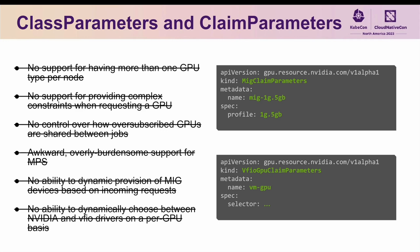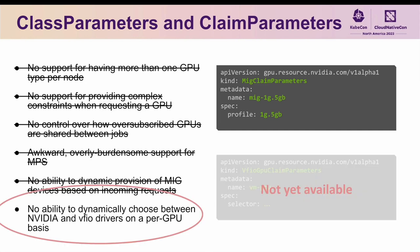With that, we've demonstrated how DRA can help us overcome the primary limitations we have with supporting GPUs in Kubernetes today. It's worth pointing out that everything discussed so far has already been implemented and is available for you to play around with today, with one exception — the VFIO GPU claim parameters. We do plan to add support for this soon, but we are currently focused on getting a proper release of the rest of the features out, so it won't be available until sometime next year.